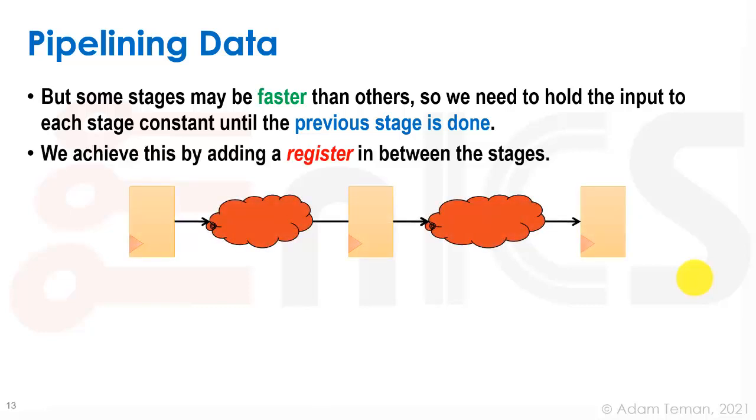So a register is like a traffic light, and it only actually advances the data once a clock edge is provided. So when we provide a clock edge to these registers, they advance the data and we do that at the time period of the slowest path.